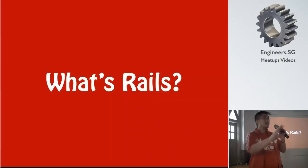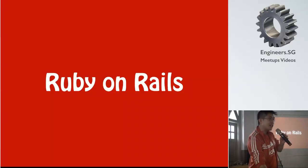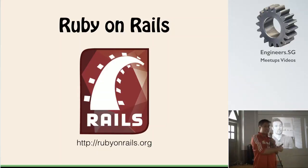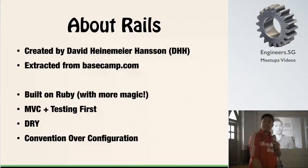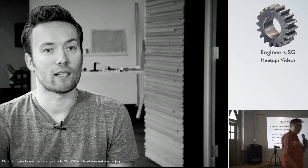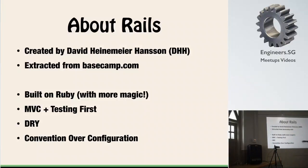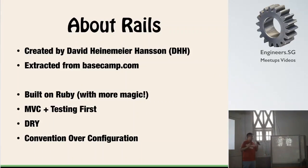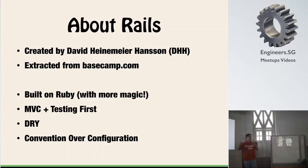So what is Rails exactly? We know Ruby is a programming language, but what is Ruby on Rails? It was created by David Heinemeier Hansson — we call him DHH for short. This framework was extracted from his work on Basecamp. When he decided to create Basecamp, he thought Ruby looked good. There wasn't any framework around at that time in 2005. As he started to build his application, he thought there were parts he could extract and open-source — give back to the community. So he extracted it from Basecamp and released it as Ruby on Rails.